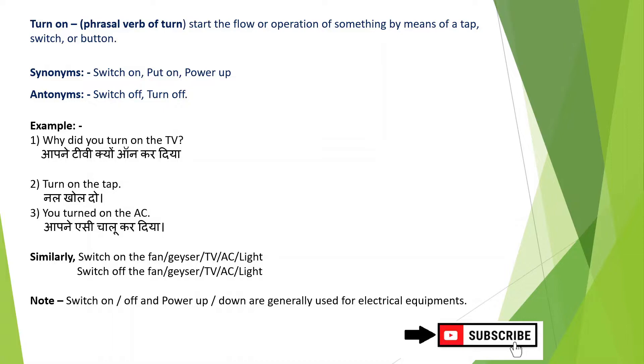Turn on is widely used. With the help of examples, we will see how we can use this phrase in a sentence. Why did you turn on the TV? Turn on the tap. Turn off the tap. Turn on means to open, turn off means to close. You turn on the AC.